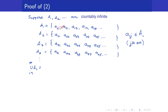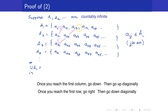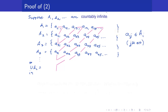We start with a_{11}, go right, then go diagonally left, then go down, then go up. Once we reach the first row, we go right again, then diagonal to the left, then down, down, down. Once we reach a boundary, we go diagonal again. This diagonal traversal — Cantor's diagonalization — allows us to list all elements of the union. This gives intuition that the union is really countably infinite when all the component sets are countably infinite.